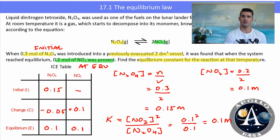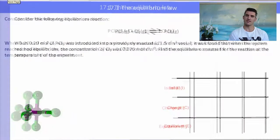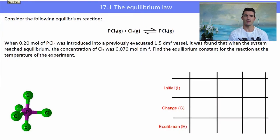Here's another example, a little bit more challenging—three species in this equilibrium. We have PCl₅(g) + Cl₂(g) ⇌ PCl₃(g). When 0.2 moles of PCl₅ was introduced into a previously evacuated 1.5 dm³ vessel, it was found that when the system reached equilibrium, the concentration of Cl₂ was 0.070 mol/dm³. Find the equilibrium constant at this temperature.